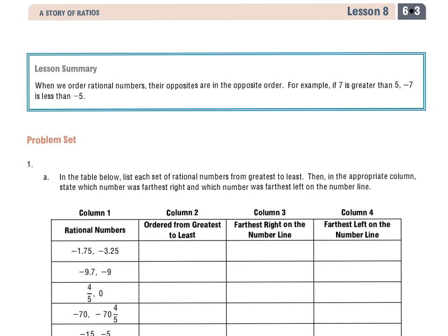Let's take a look at number 1. In the table below, list each set of rational numbers from greatest to least. Then, in the appropriate column, state which number was farthest right and which number was farthest left on the number line.